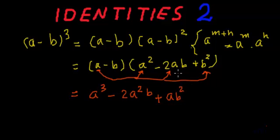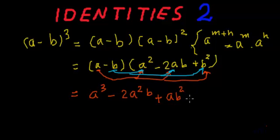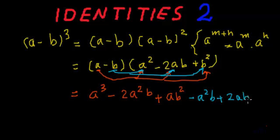Now we will multiply minus b to all the terms of the second expression. Minus b multiplied by a squared gives minus a squared b. Then minus b multiplied by minus 2ab gives plus 2ab squared. And then minus b multiplied by b squared gives minus b cubed.